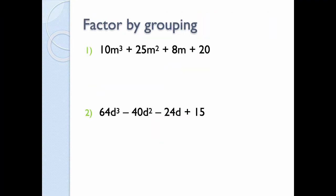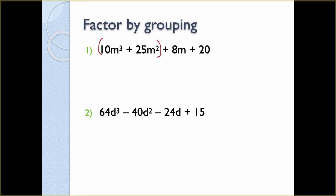Now we're going to actually factor by grouping using the three-step process. We take the first group in parentheses and the second group in parentheses. For 10m³ + 25m², what's common between 10 and 25 is 5, and the lowest exponent is m², so the GCF is 5m². Dividing: 10m³ ÷ 5m² = 2m, and 25m² ÷ 5m² = 5. So inside the first parentheses we have 2m + 5.